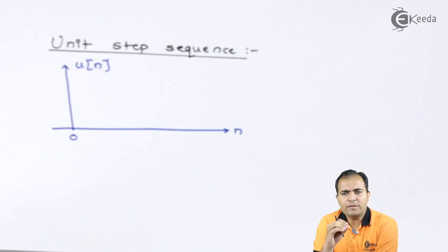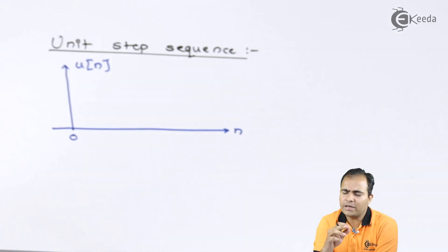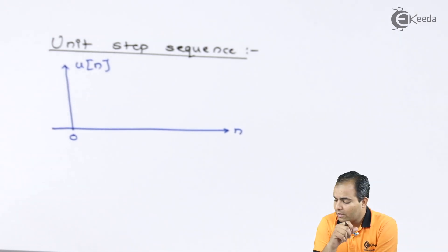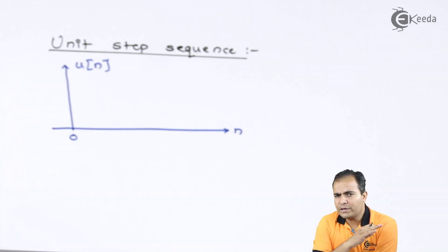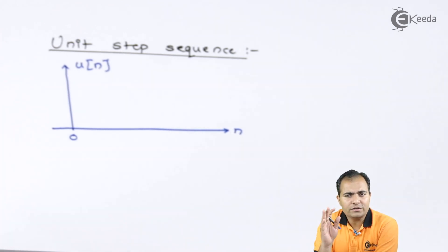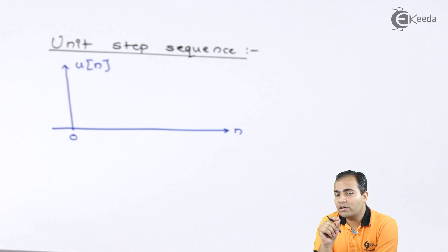This graph is only available for particular instants of time, and the amplitude is 0 between any two instants. Now moving on to the unit step sequence: step sequence means the amplitude remains the same and does not change, but in the discrete case this amplitude is only available at particular instants of time.